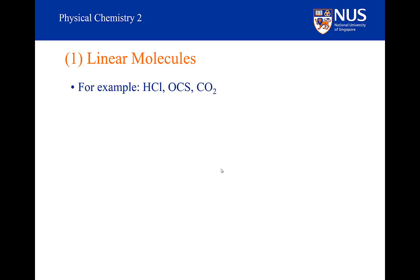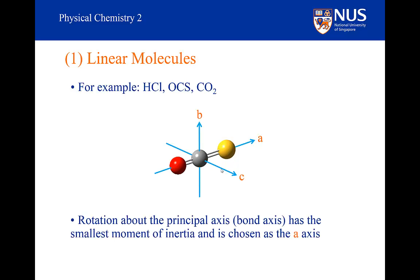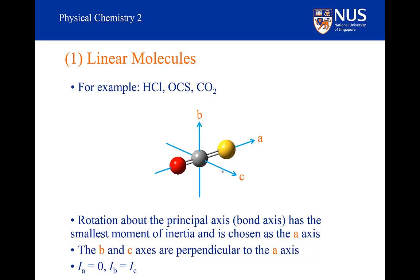Let's look at linear molecules like HCl, OCS, and CO2. Here we have OCS, a classic triatomic linear molecule that possesses a permanent dipole moment and so has a rotational spectrum. The A axis is the internuclear axis, and around this axis the moment of inertia is equal to zero. The B and C axes are perpendicular to the A axis and identical to one another. The A axis is the C-infinity axis and is the principal axis of a linear molecule. I_A equals zero, and I_B equals I_C.